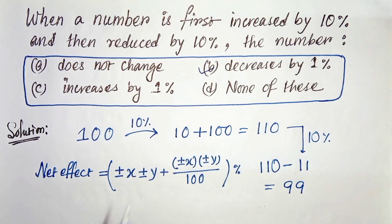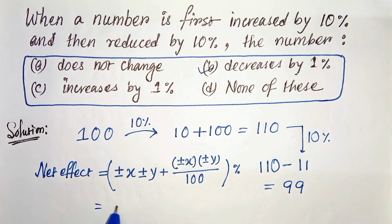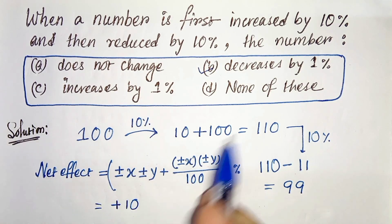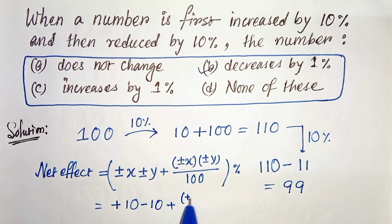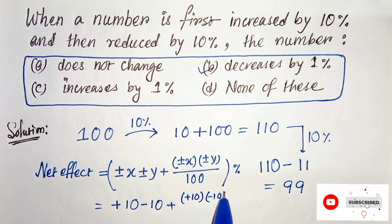So our number is first increased by 10%, that means we can write it as +10, and then it's reduced by 10%, so it is -10, and here it will be +10 times -10 divided by 100.